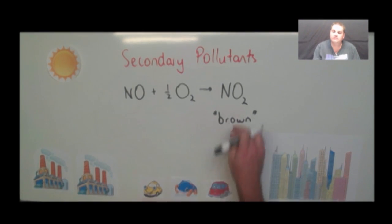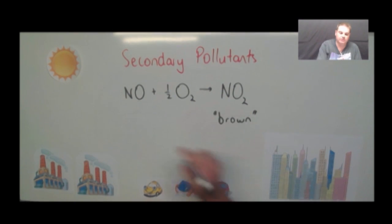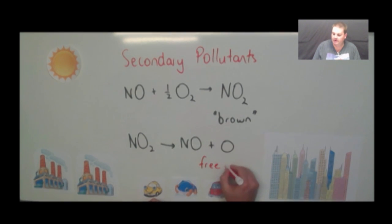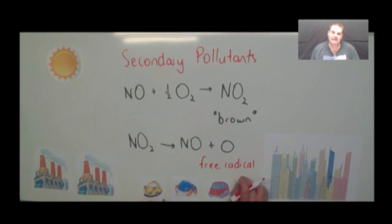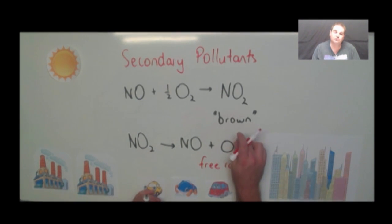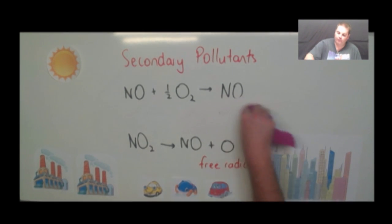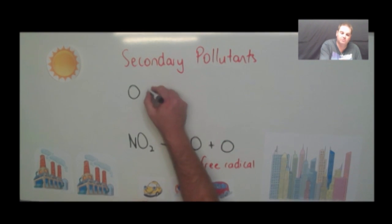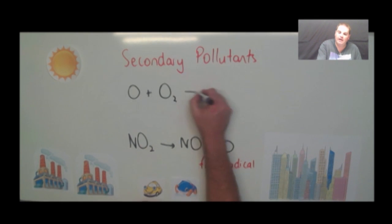What can also happen is that this nitrogen dioxide can actually break down again — kind of go the backwards reaction. So nitrogen dioxide can reform nitrogen monoxide and an oxygen free radical. You're probably not used to seeing oxygen like this — this is what we call a free radical. It has a free electron because it's not bonded to anything else, which makes it really, really reactive. So that free radical wants to combine, and one of the most common things it combines with is oxygen gas.